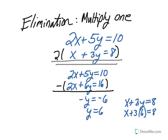When we substitute y in for that, we get x plus 3 times 6 equals 8. Then we have x plus 18 equals 8. Subtracting 18 from both sides, we get x equals negative 10.